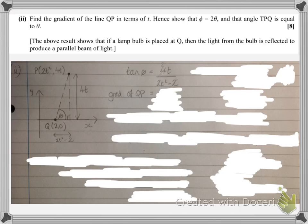So this means that tan phi is 4t, difference in y, divided by 2t squared minus 2, difference in x. We can cancel out the 2s, divide the whole numerator and denominator by 2 to get that tan phi, or the gradient of QP, which is after all what we were actually asked for, is 2t over t squared minus 1. And that is in terms of t, which is what was required.